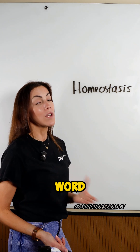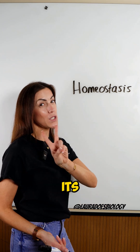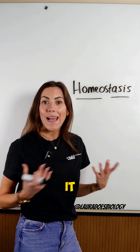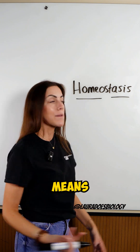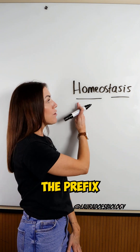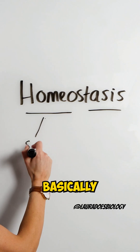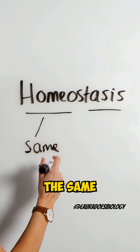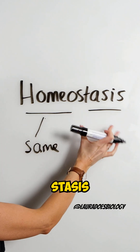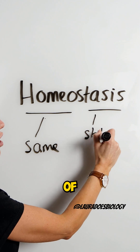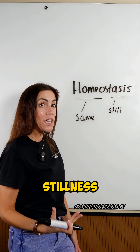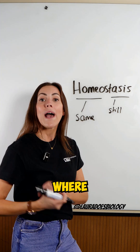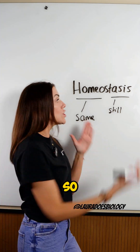If we break this word down into its two parts, we can really make sense of what it actually means. The prefix 'homeo' basically means 'the same', whereas 'stasis' means a period of stillness or inactivity, or where equilibrium is reached.